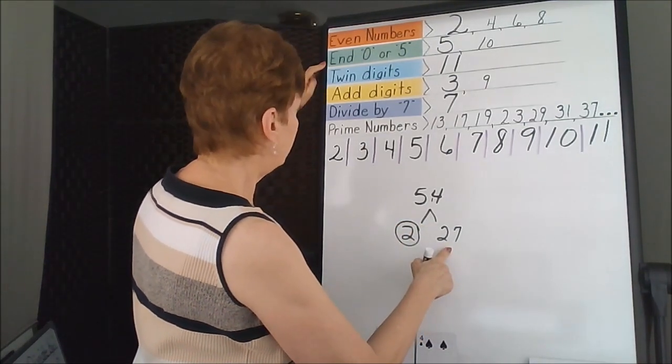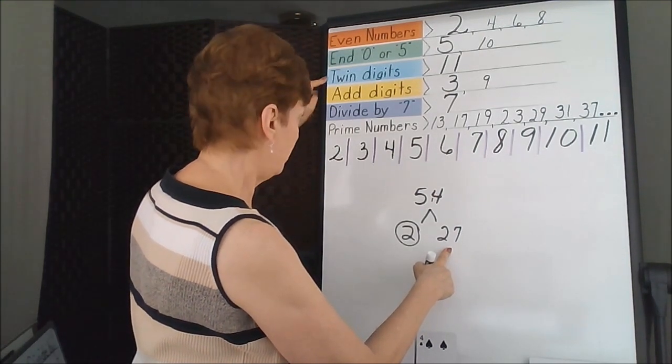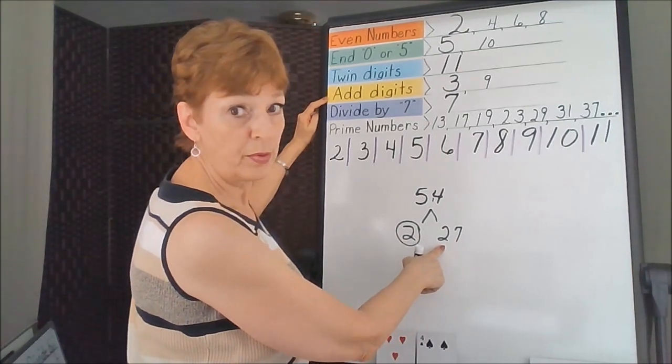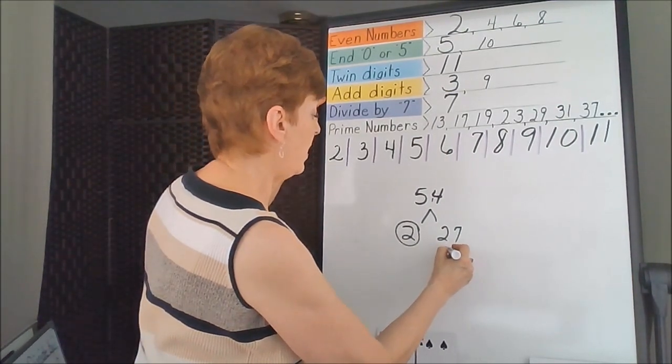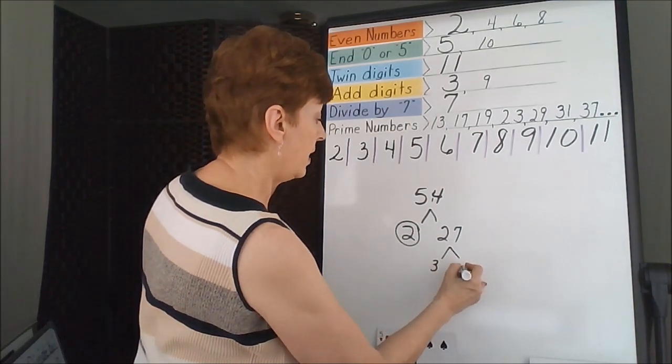27. Is it even? No. End in 0 or 5? No. Twin double digit? No. Add the digits: 2 plus 7 is 9. Well, both 3 and 9 work, so 27 is factorable to 3 times 9.